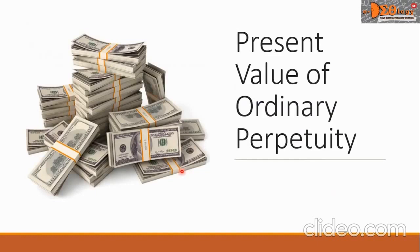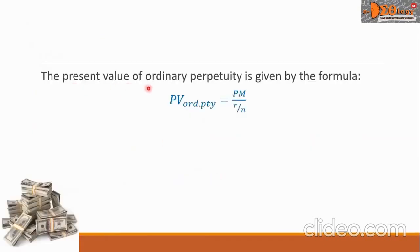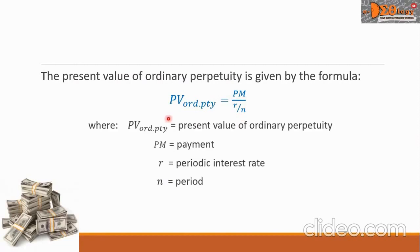Let us study now the present value of ordinary perpetuity. The present value of ordinary perpetuity is given by this formula: PV sub ordinary perpetuity equals PM over (R over N), where PV means present value of ordinary perpetuity, PM means payment, R means the periodic interest rate, and N is the period.